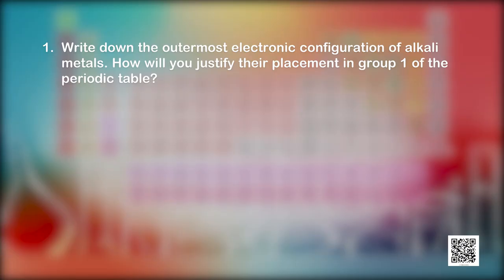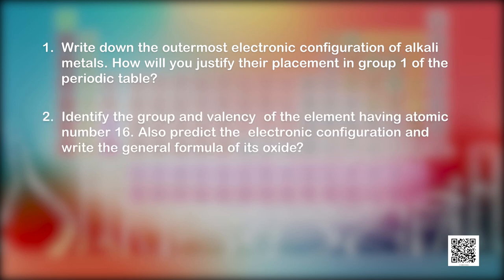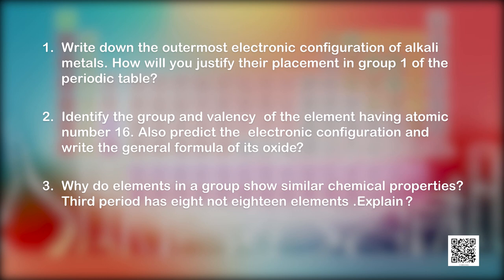Let us test ourselves by solving a few questions. Question 1: Write down the outermost electronic configuration of alkali metals. How will you justify their placement in group 1 of the periodic table? Question 2: Identify the group and valency of the element having atomic number 16. Also predict the electronic configuration and write the general formula of its oxide. Question 3: Why do elements in a group show similar chemical properties? Keep practicing and keep learning. Thank you.